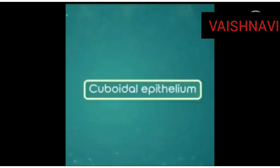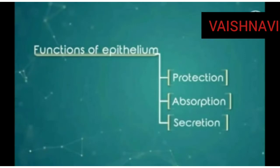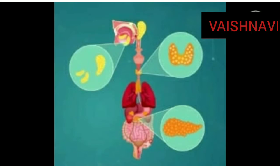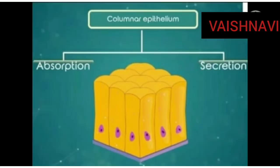Now let us know about cuboidal epithelial tissue. It provides more protection and mechanical strength, and also helps in protection, diffusion, and secretion. Cuboidal epithelial can be two to three layers thick — this is called stratified cuboidal epithelial tissue. It helps in secretion and is present in ducts of glands like salivary and thyroid, etc.